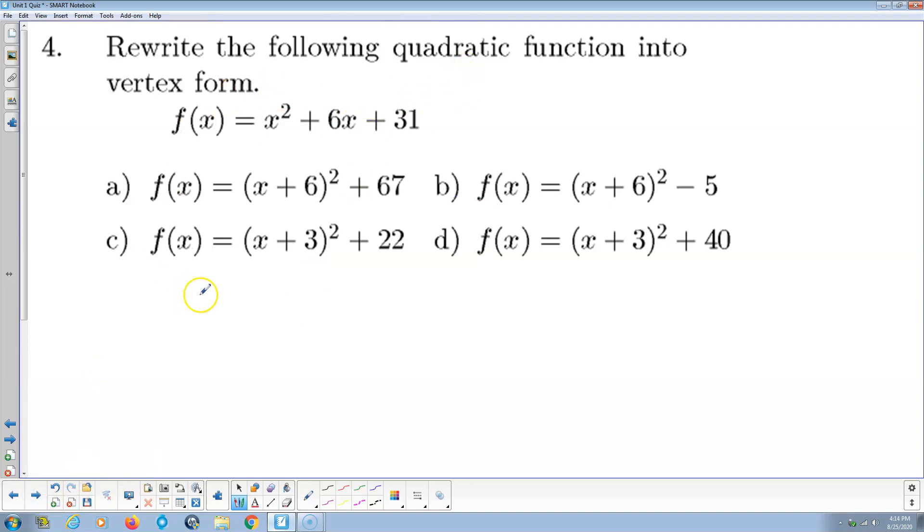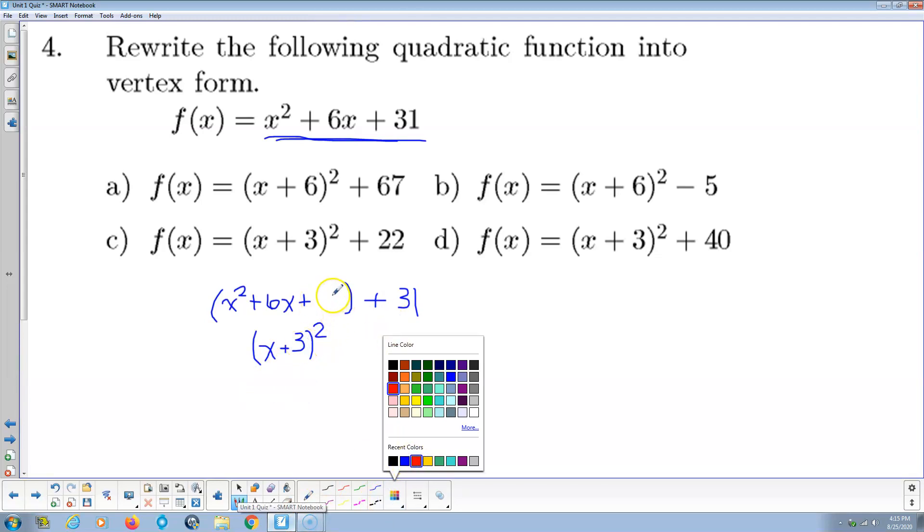Rewrite the following quadratic function into vertex form. We're going to take this, group the x squared and the x term, so x squared plus 6x, and then leave room to add a constant to force that to be a perfect square trinomial. That's why this method is called completing the square. And then we're going to have the 31 hanging outside the parentheses. Now, to complete the square, the pattern is half of 6 is 3, so I'm going to make that quadratic up there equal x plus 3 squared.